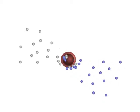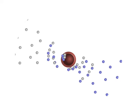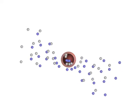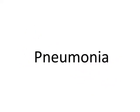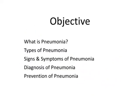Today we are going to learn about a disease of the lung called pneumonia. There are five parts to this lesson and I am going to talk about the characteristics, types, diagnosis and prevention of this disease.